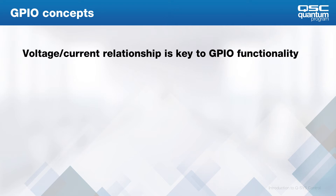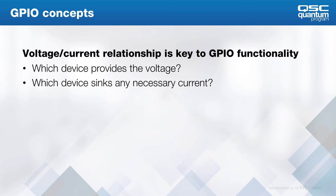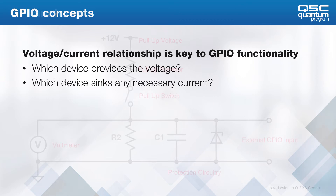To understand GPIO concepts, you first must understand the current-voltage relationship. Decide which device is providing the voltage, then decide which device is going to sink current. For instance, if you have a voltage signal and you need to light an LED, what device is going to sink the current and make the LED illuminate?